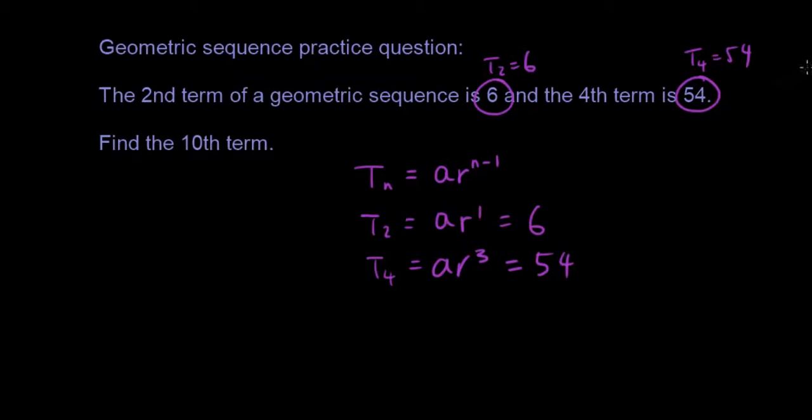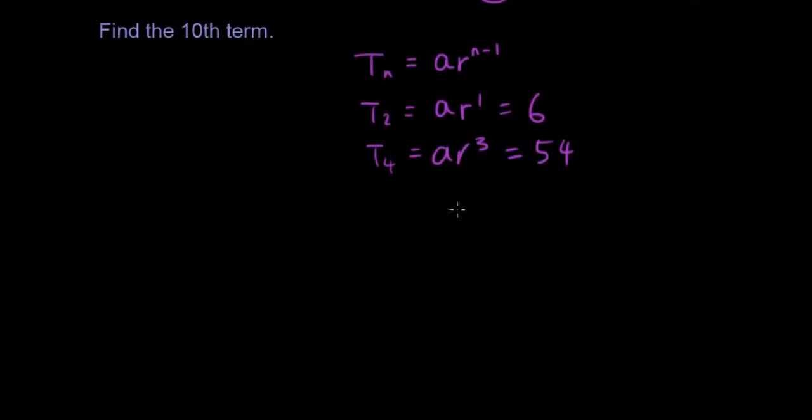How do we solve for a and r? Well, let's divide equation 2 by equation 1. Left hand side divided by left hand side, right hand side divided by right hand side. We're dividing by the same number on both sides, so you're allowed to do that with balancing equations.